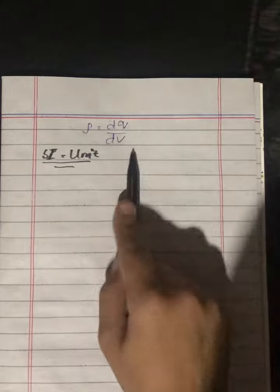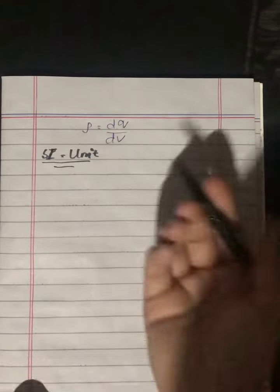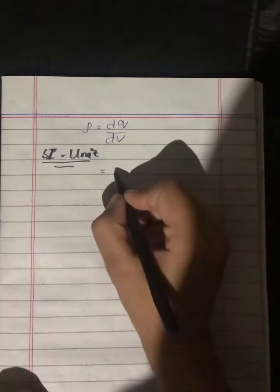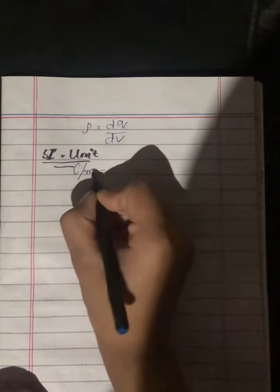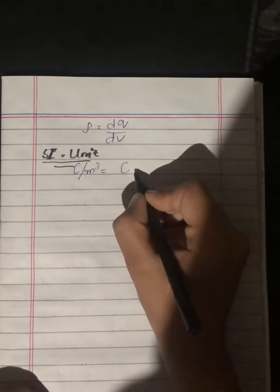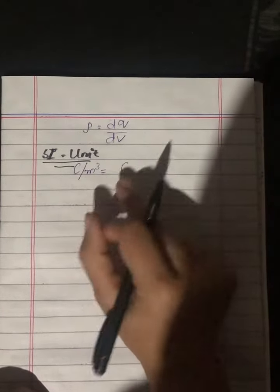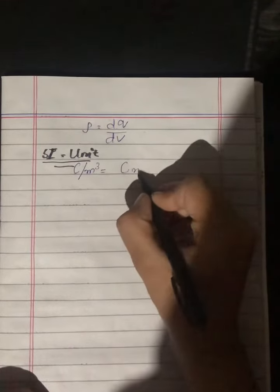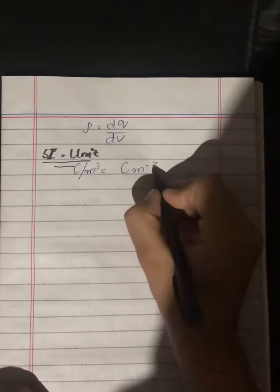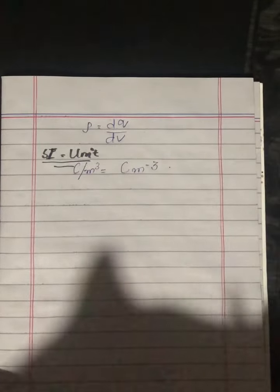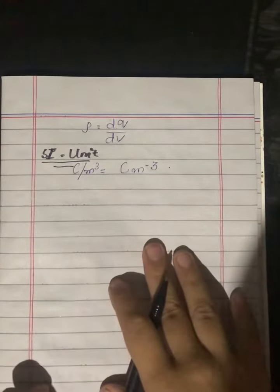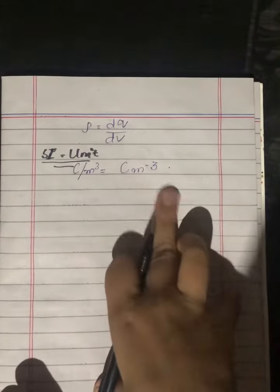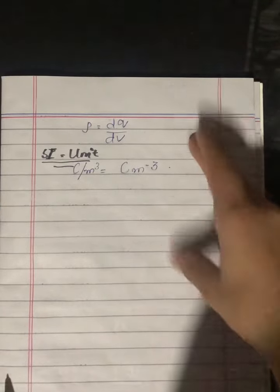The unit will become charge per meter cube, or coulombs per meter cube. That is the volume charge density. Please note the current values.